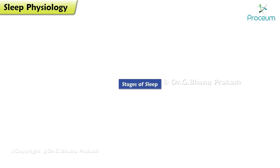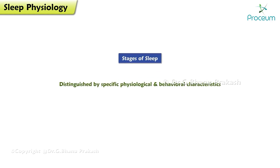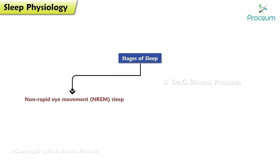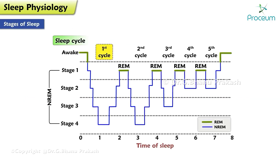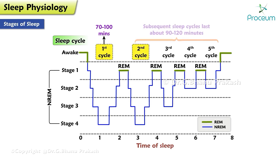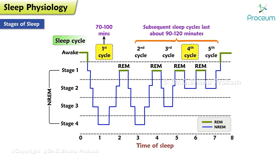Stages of sleep: Sleep is composed of several stages distinguished by specific physiological and behavioral characteristics. These stages are classified as non-rapid eye movement sleep and rapid eye movement sleep. The first cycle lasts roughly 70 to 100 minutes, with the most time spent in the non-rapid eye movement sleep stages. All subsequent sleep cycles last about 90 to 120 minutes.